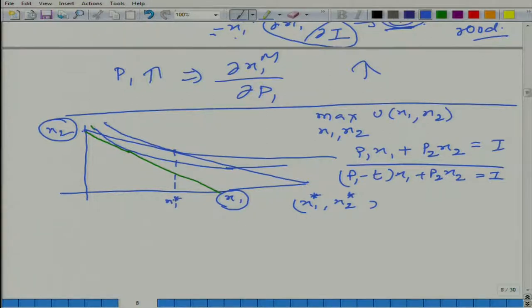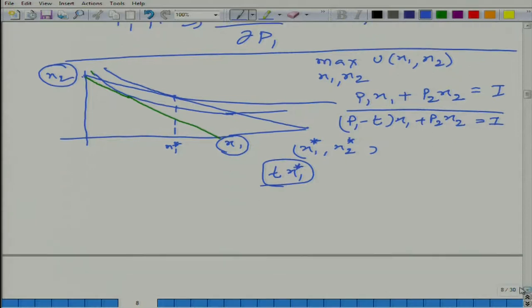Subsidy is just opposite of taxes. It is a specific subsidy, meaning for one cylinder instead of paying p₁ you pay p₁ - t, because t amount is given by the government. So it is (p₁ - t)x₁ + p₂x₂ = I. The optimal level is x₁*, x₂*. Now, there is another way of giving this subsidy: rather than giving it on gas cylinder, government can do cash transfer equivalent to this much amount.